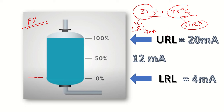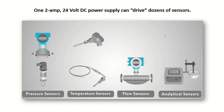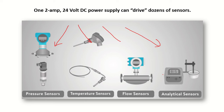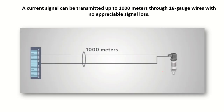A great advantage of using this 4 to 20 milliampere current loop is that a single 2-ampere 24-volt DC supply can drive dozens of sensors — pressure sensors, temperature sensors, flow sensors, analytical sensors. That is a very important aspect. Another important advantage is that data can be transmitted even for long distances, up to 1000 meters.